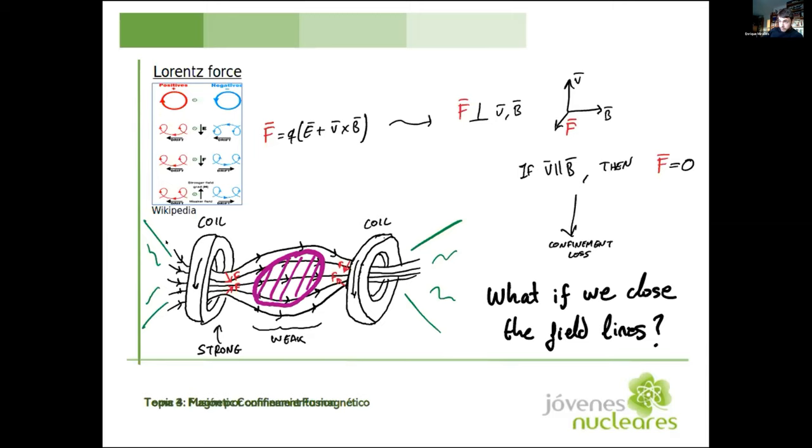These coils will generate this magnetic field. It was stronger as we move close to the coil and then weaker in the middle. The idea was to confine particles in the weakest region of the bottle. But the problem is that when the velocity of the particle is completely parallel to the magnetic field, then this particle is not going to feel any force and could escape. So we have some kind of confinement loss here.